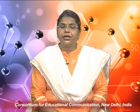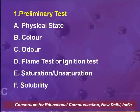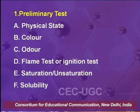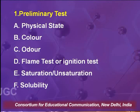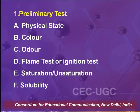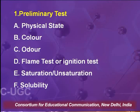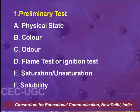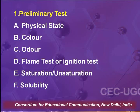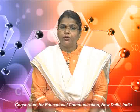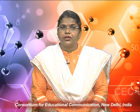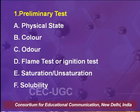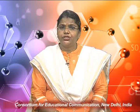The next point is color — you should immediately note down the color. If there is no color, write colorless; if there is a particular color, note it. Next is odor: if there is any kind of specific odor — pleasant, bad-smelling, any characteristic smell — note it. If there is no odor, write odorless. The next sub-step of this preliminary test is the flame test or ignition test, which we will discuss in the coming slide. Then there is saturation, unsaturation, and solubility — these are the sub-steps of the preliminary test.